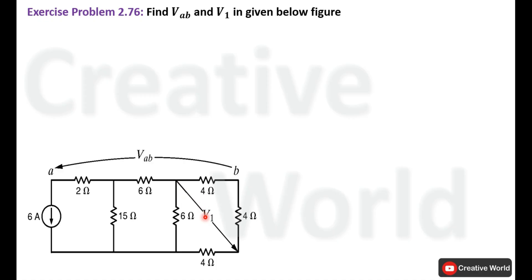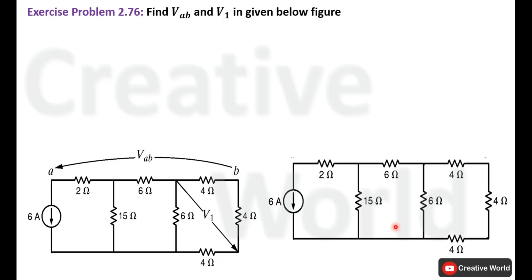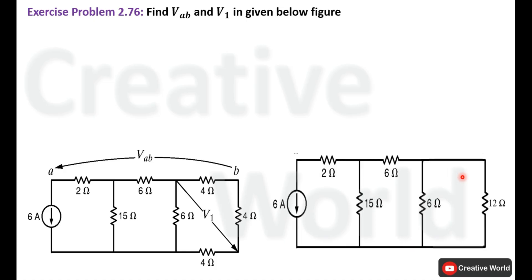To calculate the current through these individual branches, we will simplify the network starting from the right side. We will omit some variables inside this network. These three resistances are connected in series, so their equivalent resistance equals the sum of all resistance values, which comes to 12 Ohm. We can replace these three resistances with a single 12 Ohm resistance.